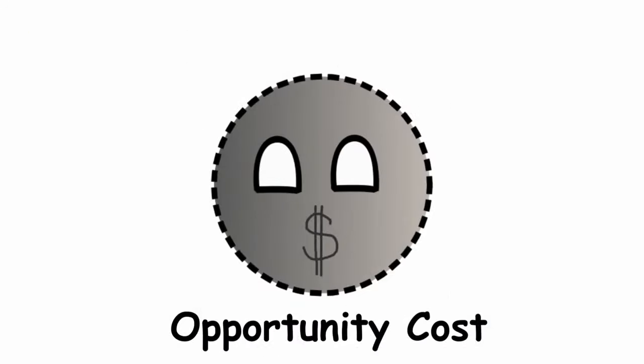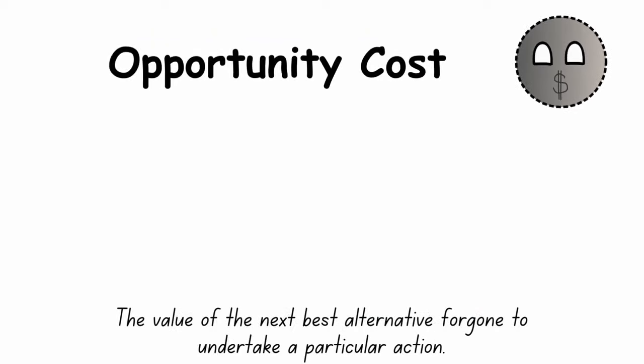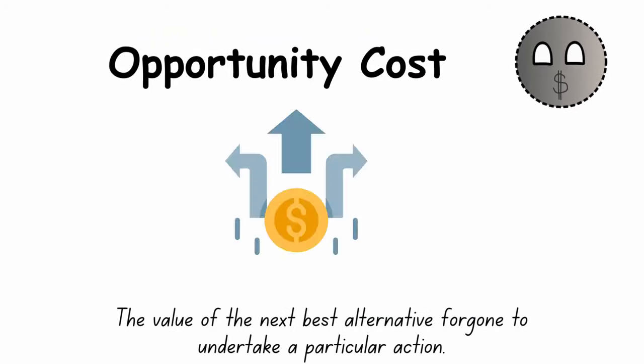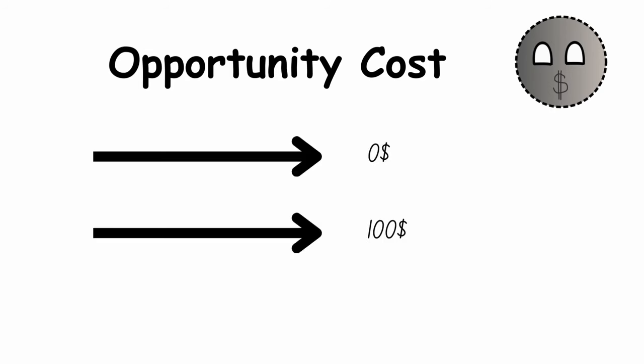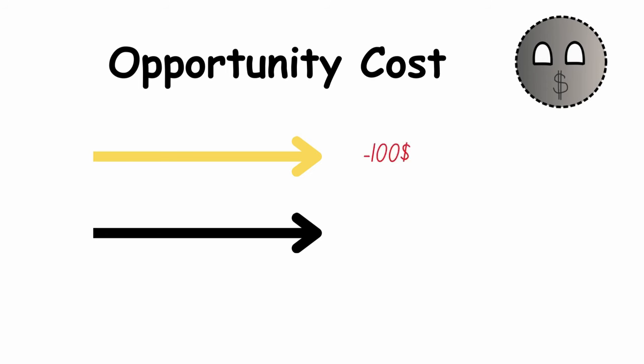Opportunity Cost is the value of the next best alternative forgone to undertake a particular action. So if you had the option of $0 and $100, and you chose the $0, then you'd actually be losing $100, including the cost of the missed opportunity.